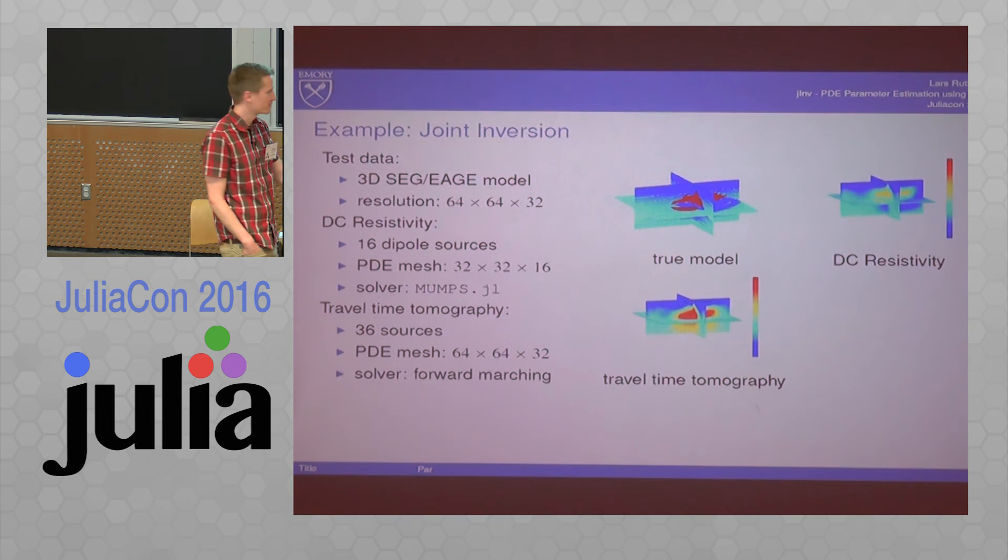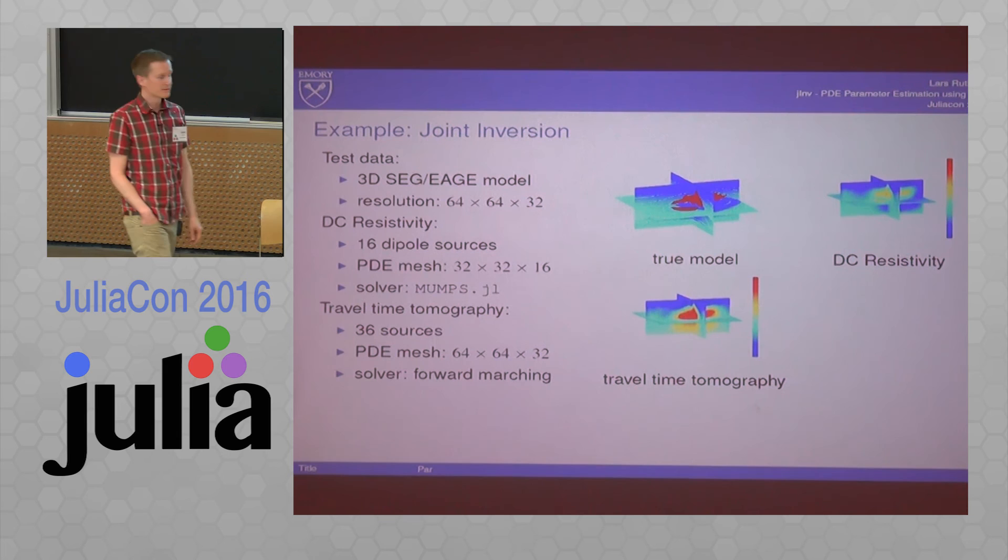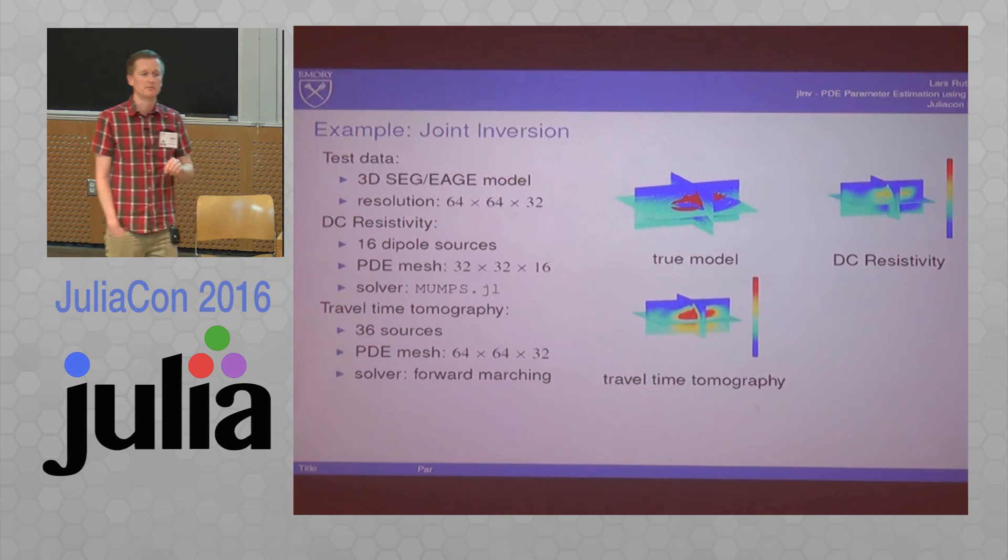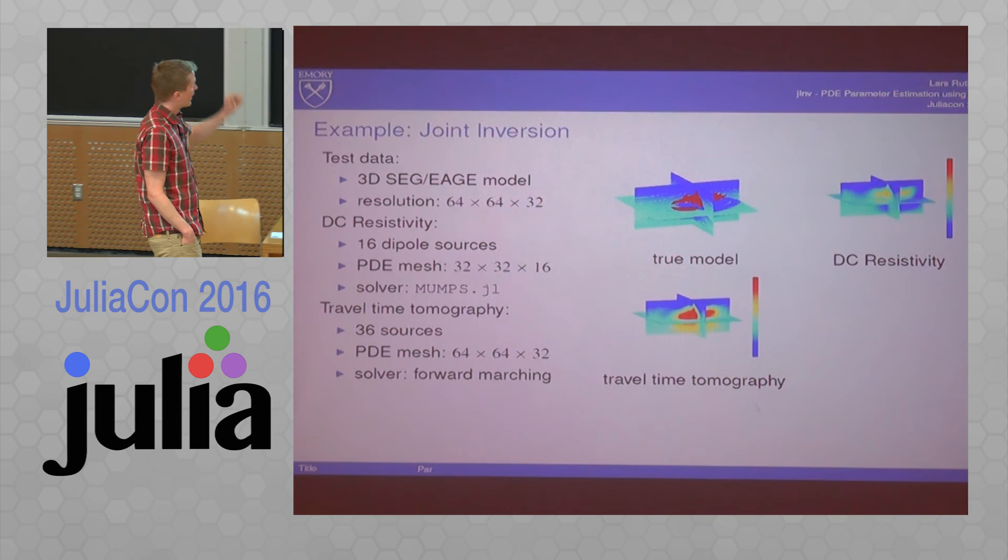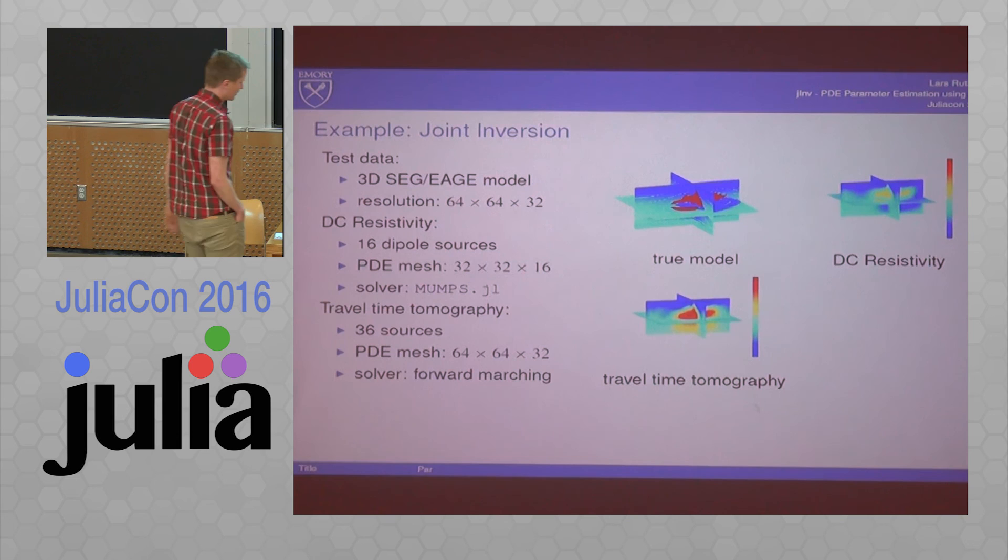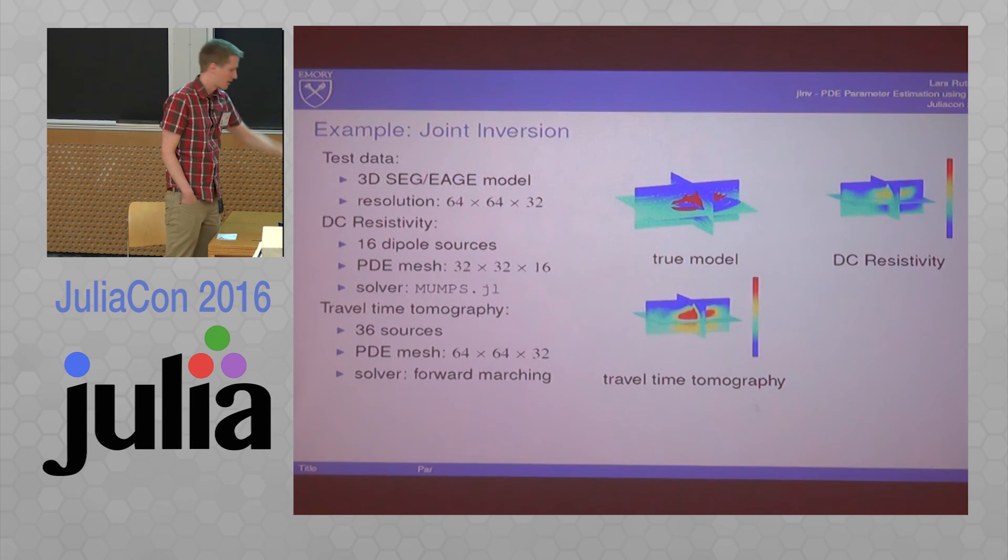Just to show you in one example that this is worth it. Here you see the true model on the top left. You see a reconstruction from the DC resistivity surveys - that's basically the Poisson equation. On the bottom left, you see the travel time tomography. That's another modality, sometimes collected at the same time. Those images both show you roughly where the - so you want to find this red thing. In this case, it's a salt reservoir. They show roughly the location, but they don't show a very nice image. They both have different characteristics. In the travel time tomography, you don't see the depth. If you combine them, you see a much better picture.